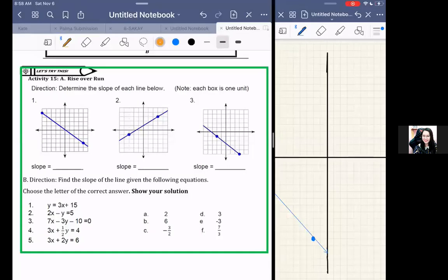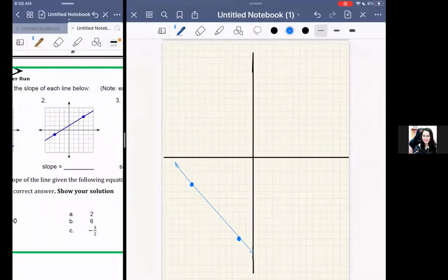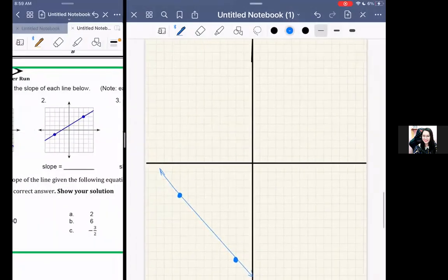Hello, for Activity 15 Rise Over Run, that is all about slope. We need to determine the slope of each line below. Each box is one unit, so we need to find the slope. How do we get that? Let's find out.